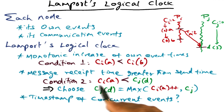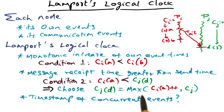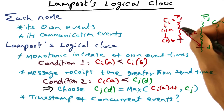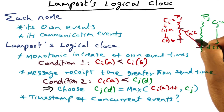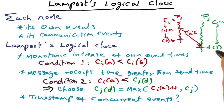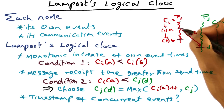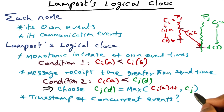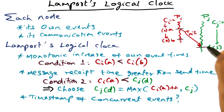To satisfy the second condition, we choose the timestamp for the receive event D as the max of the incoming timestamp from the send event incremented by some quantity — CI(A)++ — and the local counter CJ. So what we pick as the timestamp for D is the max of the incoming message timestamp and the local counter, whatever it is pointing to. That's how we assign a timestamp to a receive event.